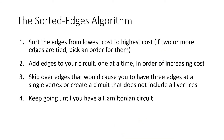Here's the sorted edges algorithm step by step. We sort the edges from lowest cost to highest cost — if two edges tie, just pick an order for them. Then we add edges to our circuit one at a time in order of increasing cost, starting with the cheapest. We skip over any edges that would cause three edges at a single vertex, or that would create a circuit not including all vertices. We keep going until we have a Hamiltonian circuit, and we might reach that before the end of our list.